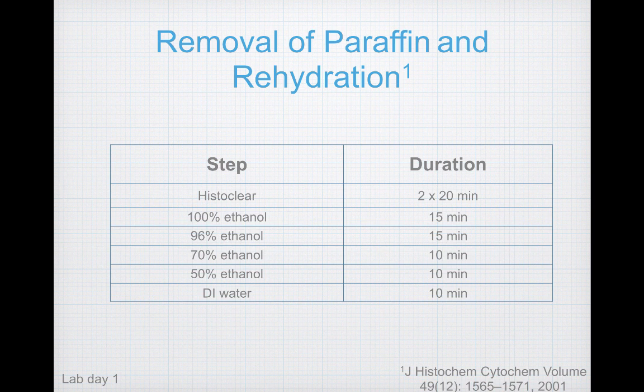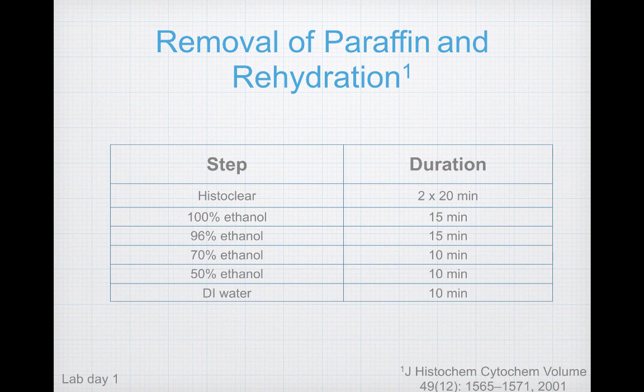Before continuing with staining, you have to first remove the paraffin from the microscope slides. You'll do this by immersing the slides in Coplin jars filled with histoclear, which will dissolve the paraffin wax away — do this twice for 20 minutes each. Then rehydrate your tissue by immersing the slides in graded ethanol solutions, starting with 100% ethanol then 96% ethanol for 15 minutes each, then 70% and 50% for 10 minutes each, and finally immerse the slides in DI water for 10 minutes. All of this is done in the Coplin jars.